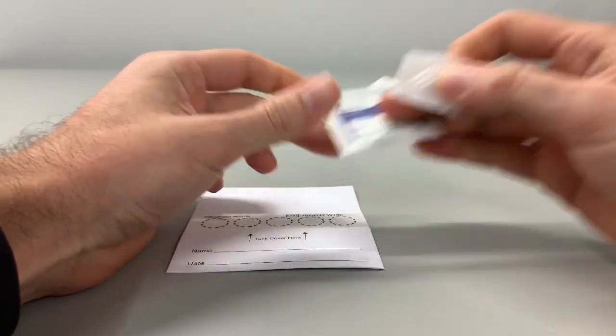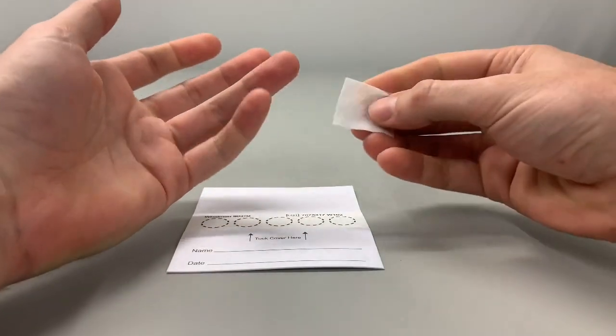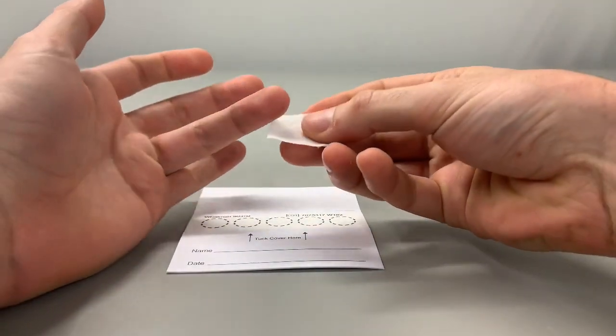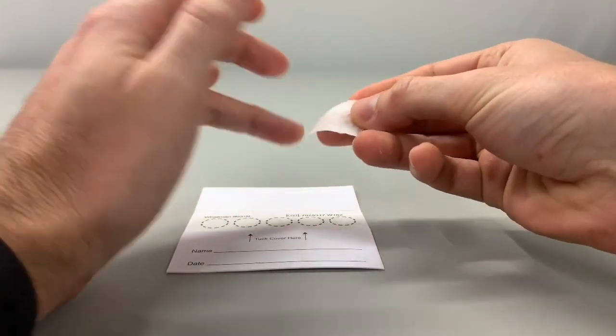Take an alcohol pad and choose either your middle or ring finger of your non-dominant hand and clean it with the alcohol pad.